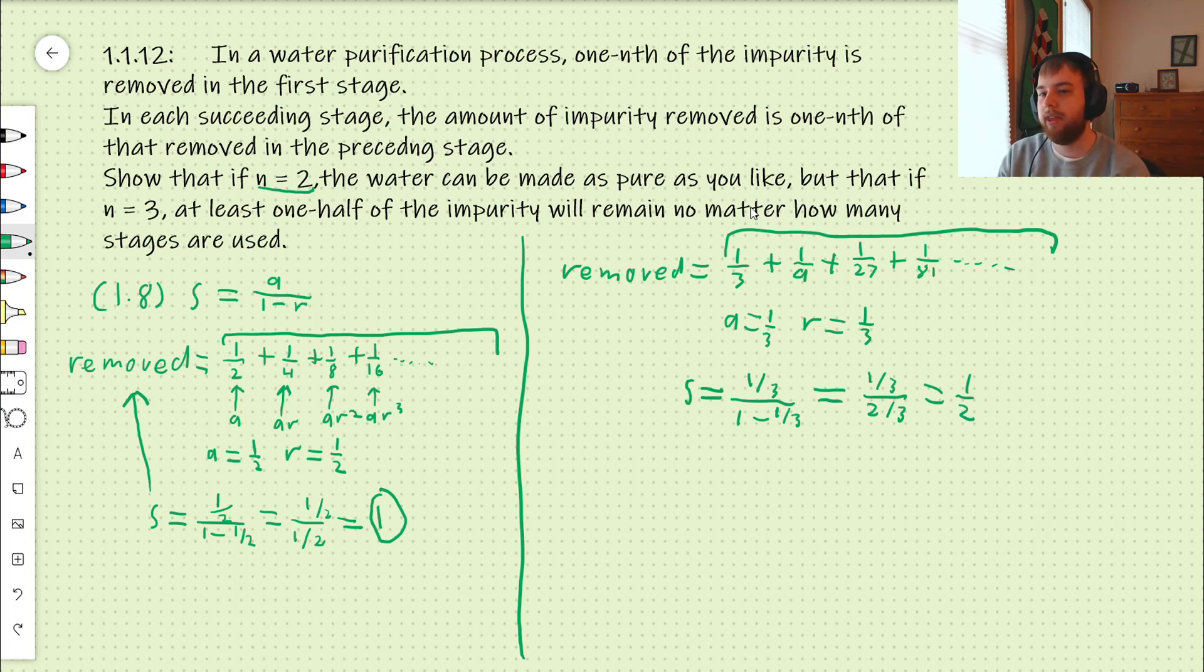Remember, we are supposed to prove that we can make the water as pure as we like when n equals 2. But, when n equals 3, at least 1 half of the impurity will remain. When we go out to infinity for this second series, we can only remove half of the impurity.